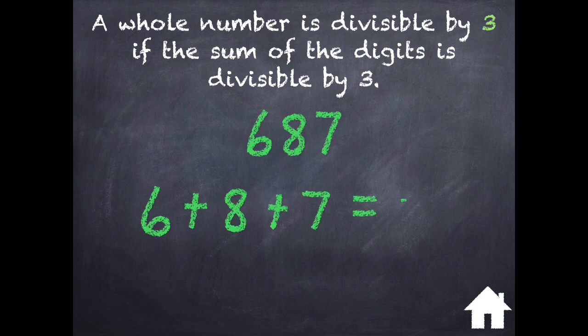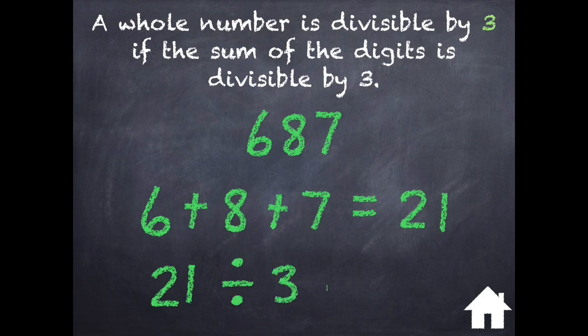So 6 plus 8 plus 7 equals 21. 21 can be divided by 3 because 21 divided by 3 is 7. So 687 is divisible by 3.